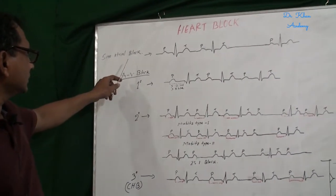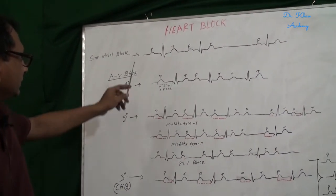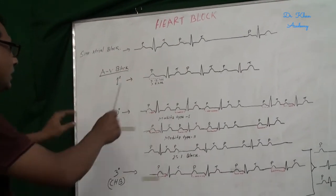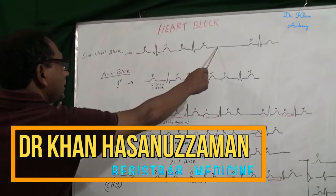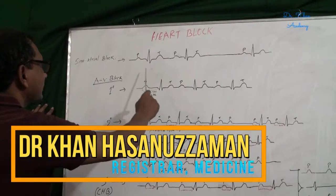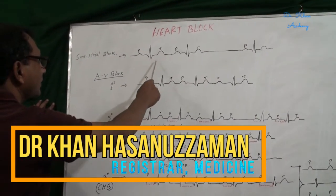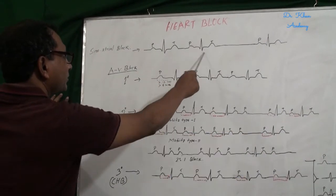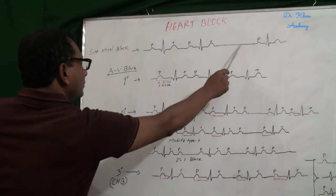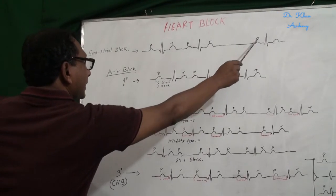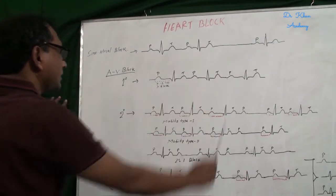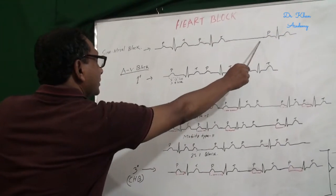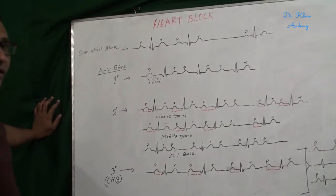What is sinoatrial block? SA block means sinus beat is followed by no sinus beat — there is no PQRST complex. Here, P is followed by the QRS complex and T, and then there is no PQRST complex, and again P is followed by QRS complex and T. This is sinoatrial block.